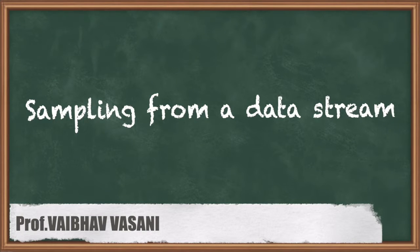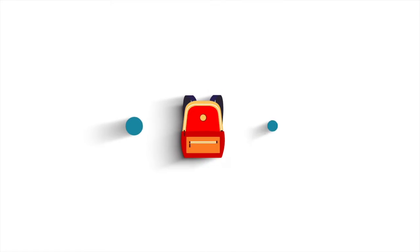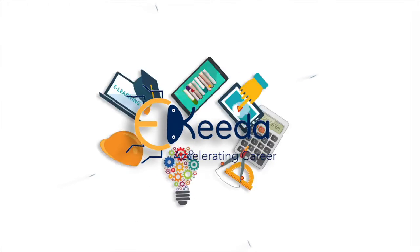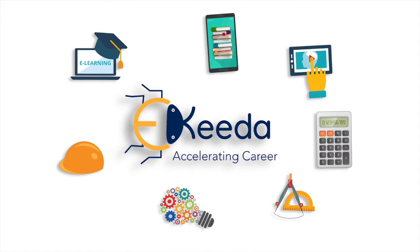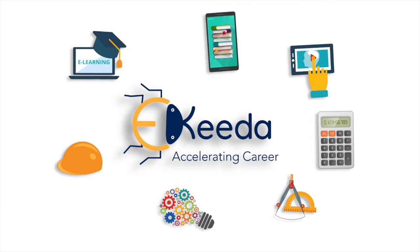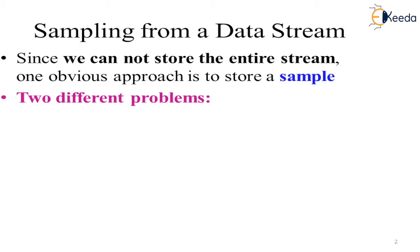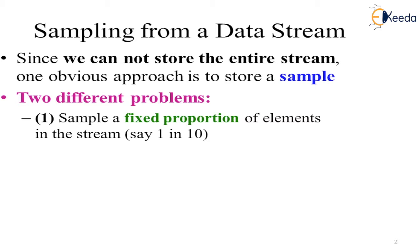Hello students, we will be studying sampling from data stream. Since we cannot store the entire stream, an obvious approach is to store a sample because the stream consists of a huge amount of data which is coming at high speed which is very difficult to store, so we can store only sample. So there are two different problems.